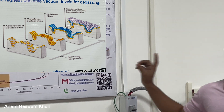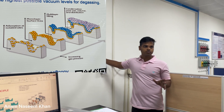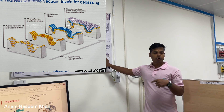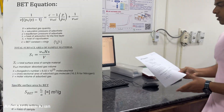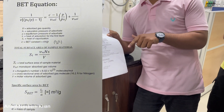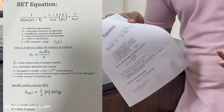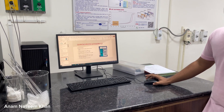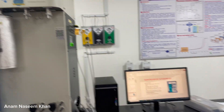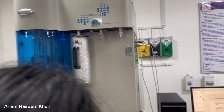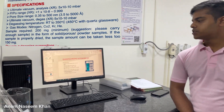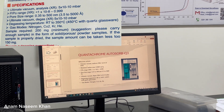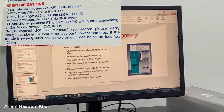In the case of chemisorption, there is no multilayer formation because only a chemical bond is formed, so only a monolayer is formed there. This is the BET equation — how we calculate pore size and surface area from the data. The measurable pore size range is 0.35 nanometers to 500 nanometers, and surface area greater than 0.005 square meters per gram.